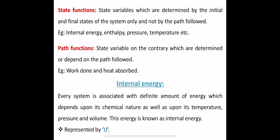Enthalpy and temperature are also state functions. For example, temperature changes from 30° to 60° to 80°, but we do not consider the path by which the maximum temperature is attained. So state variables are determined by the initial and final states of the system, not by the path followed.